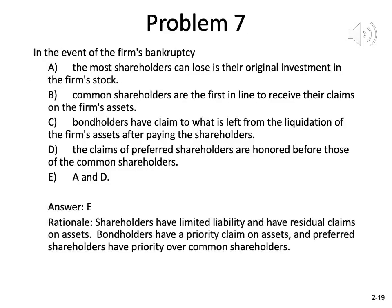In the event of the firm's bankruptcy: A — most shareholders can lose their original investment in the firm's stock, which is true and happens all the time. B — common stockholders are first in line to receive claims on the firm's assets — that is wrong, they are last in line with residual claims. C — bondholders have a claim to what's left after paying shareholders — that is wrong; it should be shareholders have the claim to what's left after paying bondholders, since bondholders have higher priority. D — claims of preferred shareholders are honored before common stockholders — that is right. So the correct answer is E: both A and D are correct.